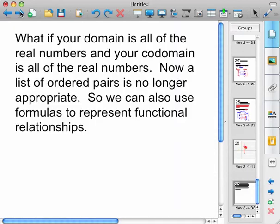So what if your domain is a set of all real numbers and your codomain is a set of all real numbers? Now a list of ordered pairs is no longer appropriate. So we can also use formulas to represent functional relationships.